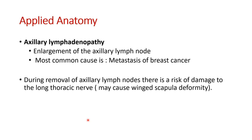During removal of axillary lymph nodes, there is a risk of damage to the long thoracic nerve, which runs superficial to the serratus anterior. This is especially likely when dissecting the anterior group of lymph nodes, as the long thoracic nerve is running very superficially there. Damage to this nerve leads to winging of the scapula.